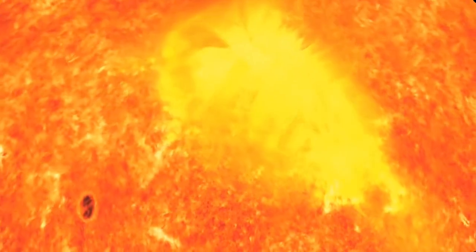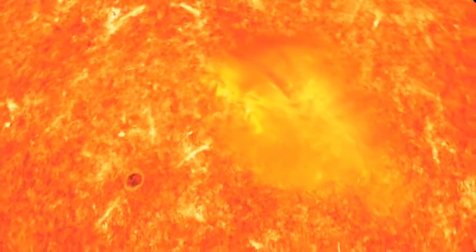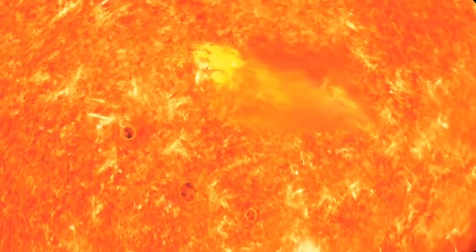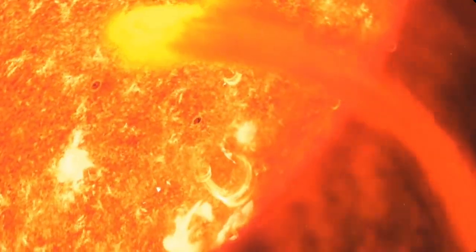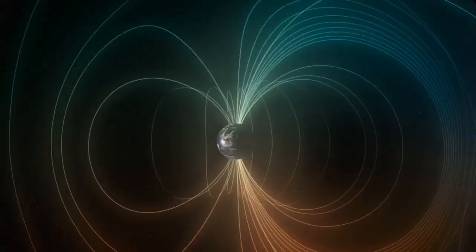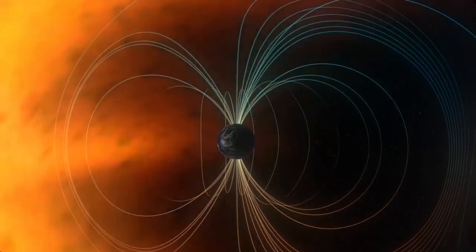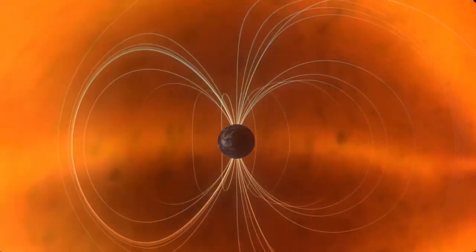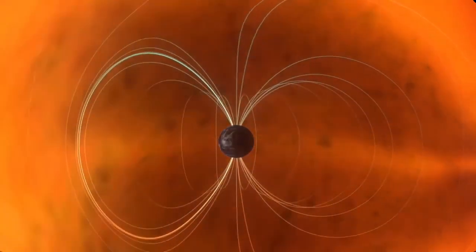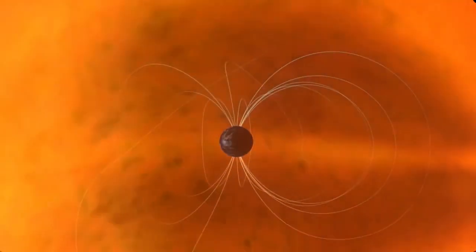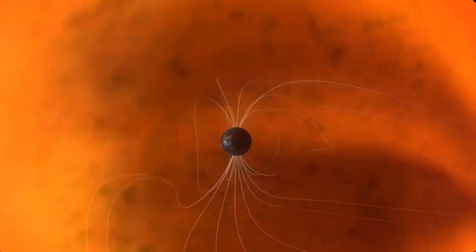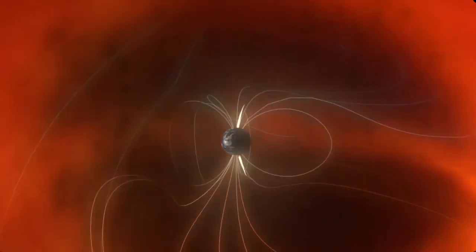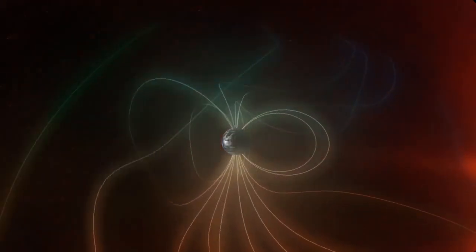If this CME is headed toward Earth, a violent blast of charged particles will slam into our protected magnetosphere in a day or two. Earth's magnetosphere has cracks caused by magnetic reconnection. The solar wind pulls reconnected field lines into the Earth's magnetic tail. These stretched field lines ultimately connect again, blasting charged particles into Earth's upper atmosphere and resulting in shimmering auroras near Earth's poles.